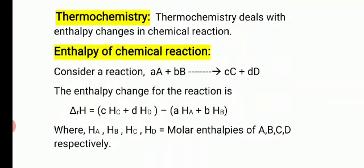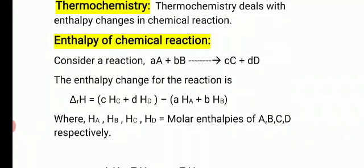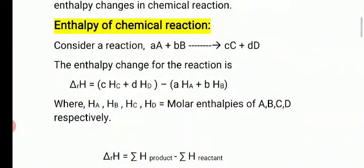Let's understand the concept of enthalpy of a chemical reaction. Consider a reaction: 'a' moles of A plus 'b' moles of B — here small a, b, c, d represent the coefficient numbers in the equation, that is the number of moles. Capital A, B are the reactants, and the small letters represent the number of moles of each substance.